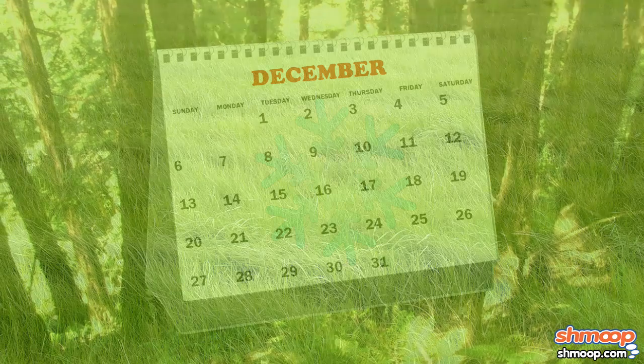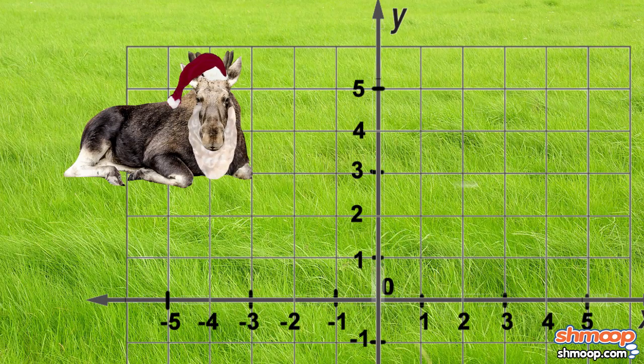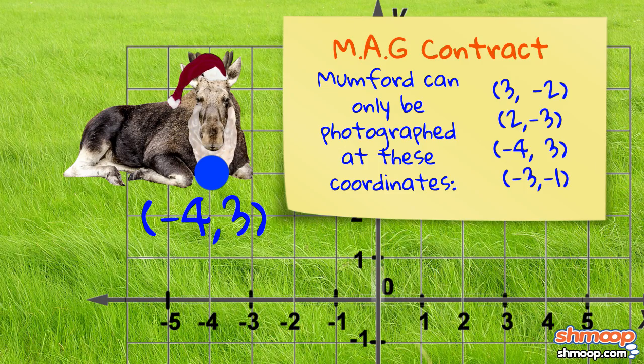Time for Mr. December. It's Mumford Claus. Yep, he's in the right spot. Negative 4, 3 is on our list.